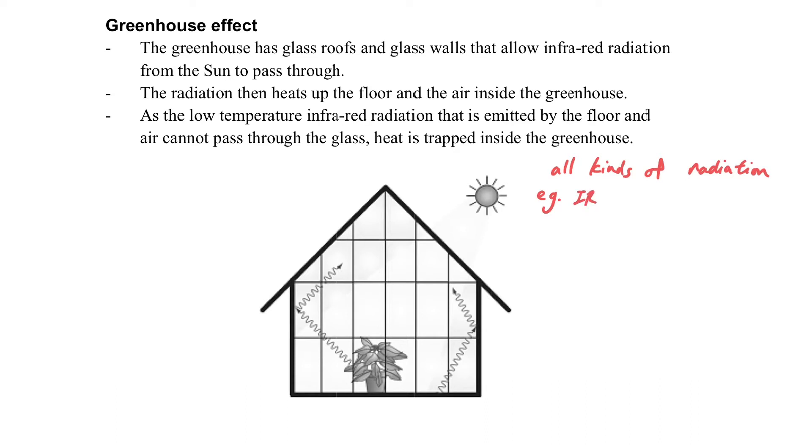Firstly, let's consider the Sun. If we still remember, for the Sun, it can give out different kinds of radiation from infrared to the ultraviolet.